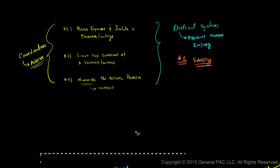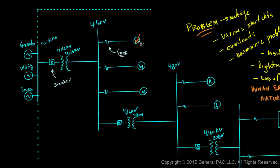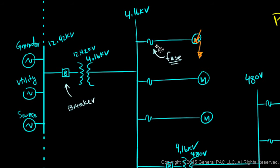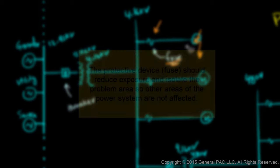So let's see how that works. Suppose that we had a fault or any sort of problem on this motor. We should expect this fuse right here to, number one, reduce the exposure of this problem, so reduce the problem area, and it should also isolate the problem area.